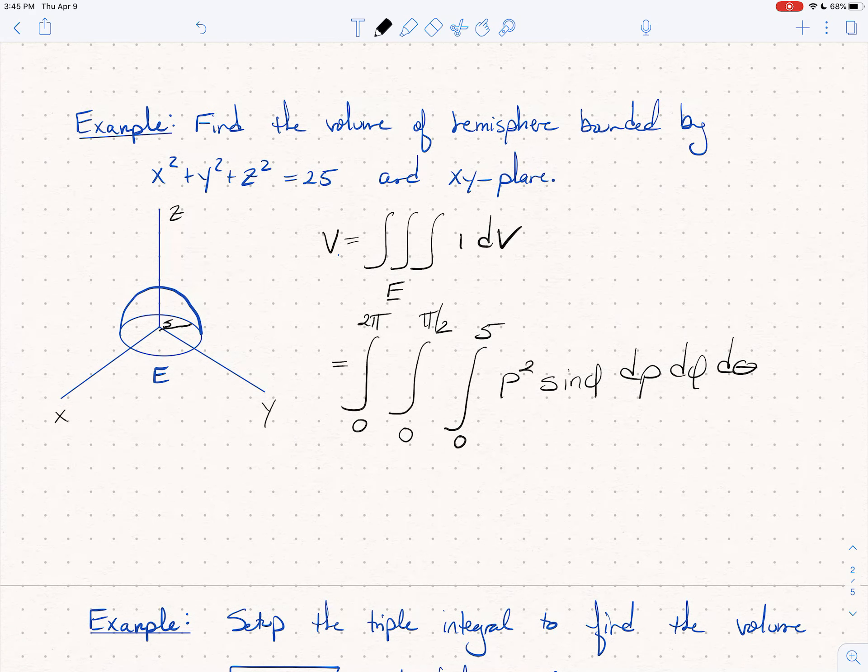Tell you what, I will do this one with you. So first off, let's just realize that there are no thetas in this. So this 0 to 2 pi d theta is just going to kick out a 2 pi at the end. So I can immediately write this as 2 pi times.